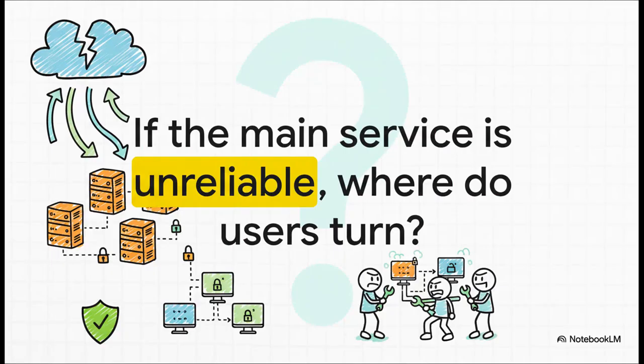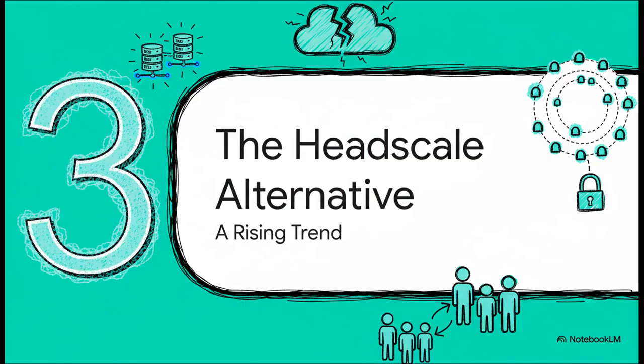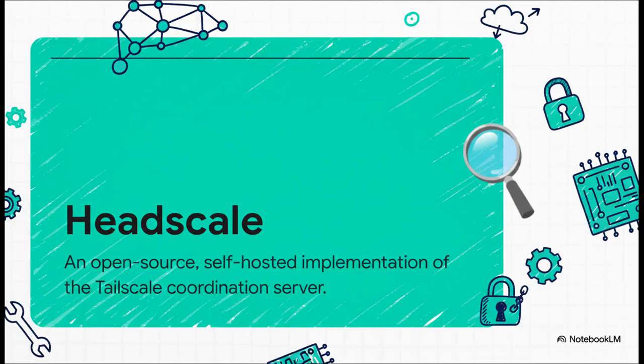So seeing that central component fail led a lot of users to ask a pretty logical question. If the one part of the service we don't actually control is the part that breaks, what's the alternative? And wouldn't you know it, the community already had an answer sitting right there. Headscale. Now, the outage didn't create Headscale, but it sure did put a massive spotlight on it. So what exactly is Headscale? Well, to put it simply, it's an open source project that lets you become your own air traffic controller. You run that control plane yourself on your own server. You get all the power of Tailscale's awesome networking, but you're the one in command of that critical central piece.